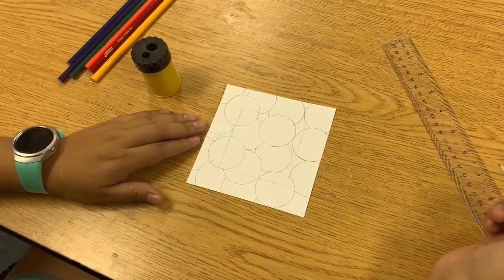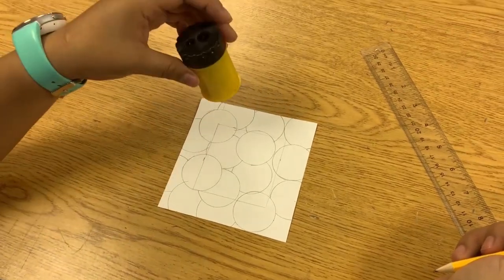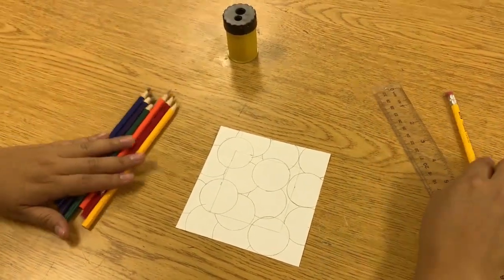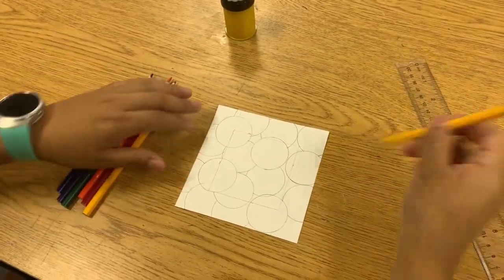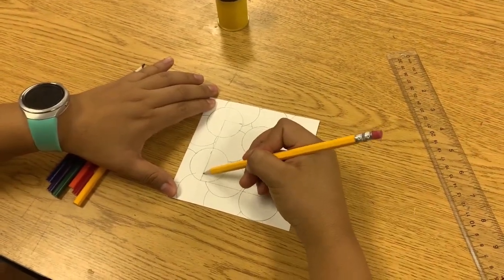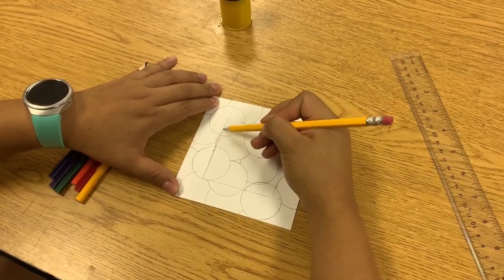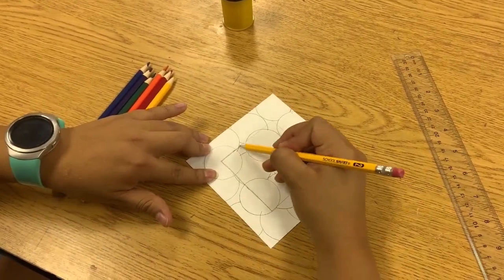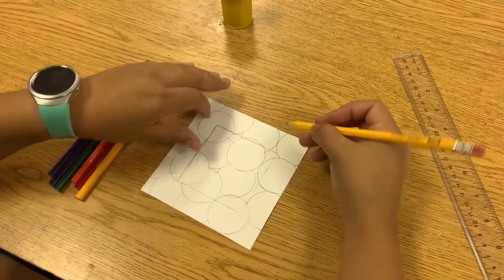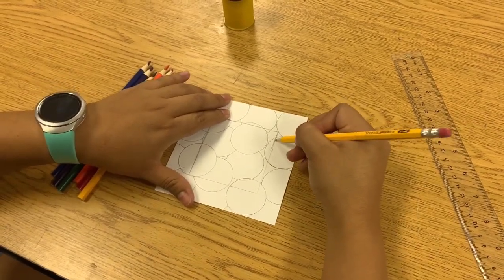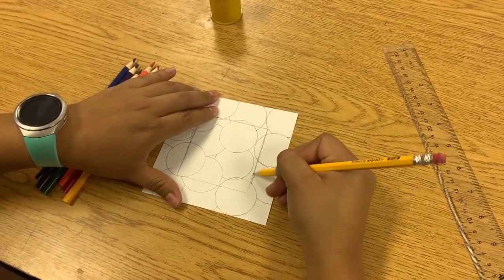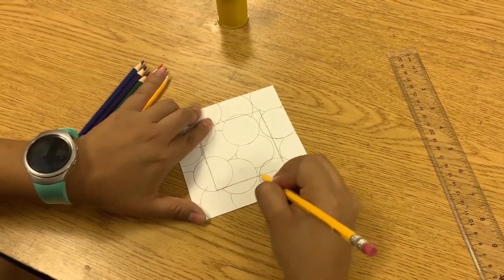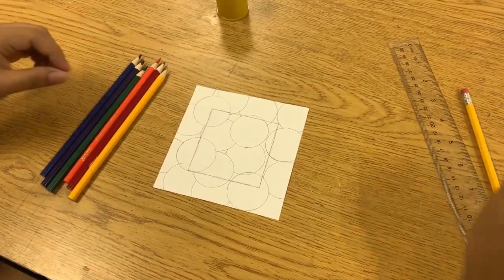Once you have your entire paper filled with your tracing, you are going to grab your colors. Now you have this perfectly drawn square right down the middle. This is going to be your dividing factor. So that means this is going to divide the certain types of colors that you can use on the inside of the square and on the outside of the square. That's where you get your cool and warm colors.